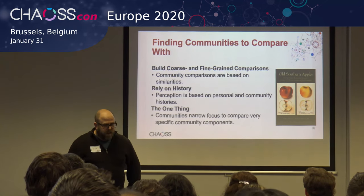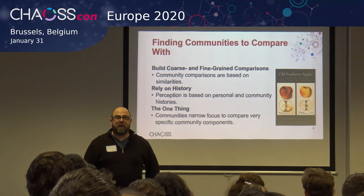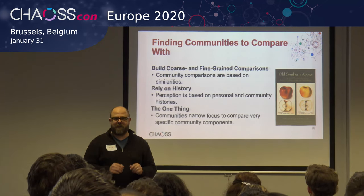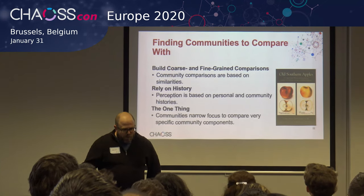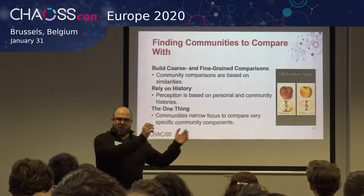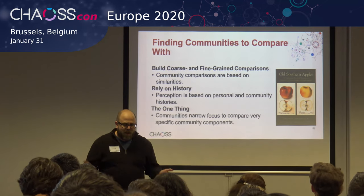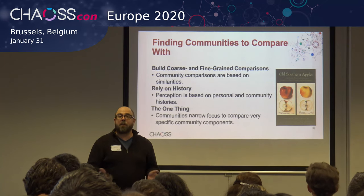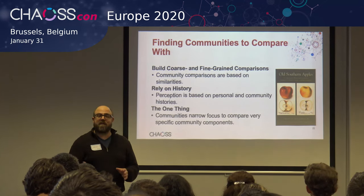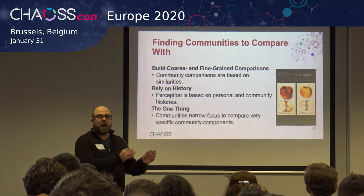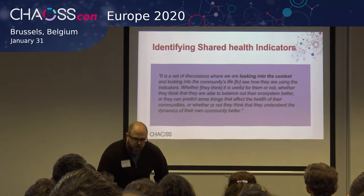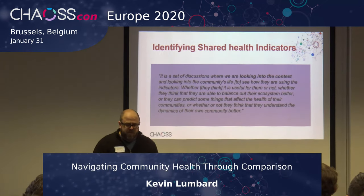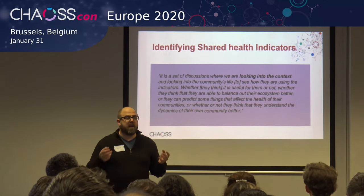Community members rely on their personal histories to understand and give context to these community health indicators. Interestingly, almost everyone we talked to cautioned us that their project was completely unique and defies comparison. So while we can't maybe compare one project to another, what we can do is compare similar community components — key processes that may be similar, or identify one or two health indicators we can take from community to community. When we narrow our focus to these similar components, we begin to define health metrics that allow us to compare our communities within a similar context.